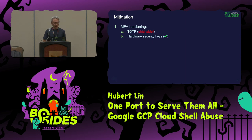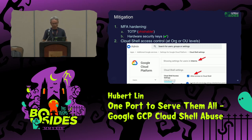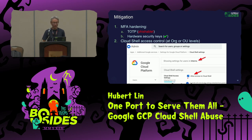The best practice mitigation will be using a hardware-based security key. Second, we could review our access control of the Cloud Shell to see if certain groups of users really need that access or not. From the Google Admin Console — not the Cloud Console — we can define or control this access. For example, we could configure certain OUs like this one and then further disable their access to the Cloud Shell.